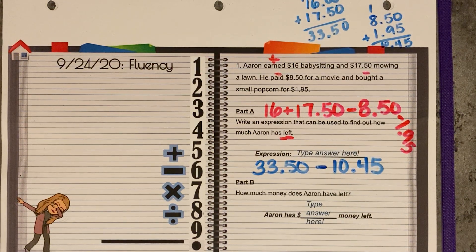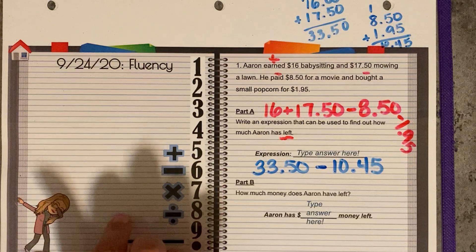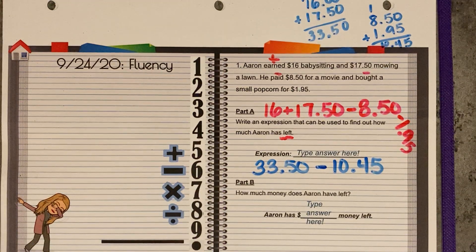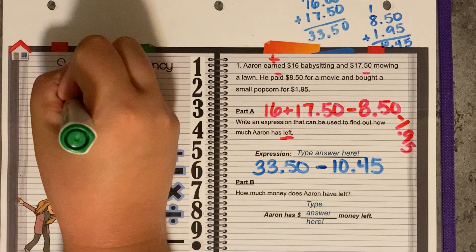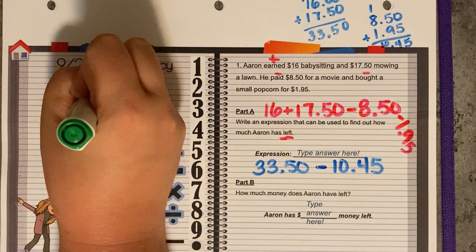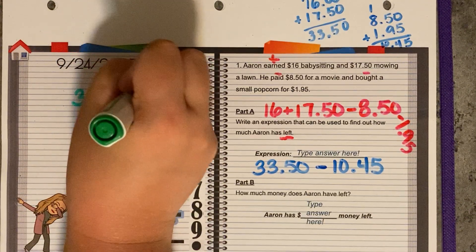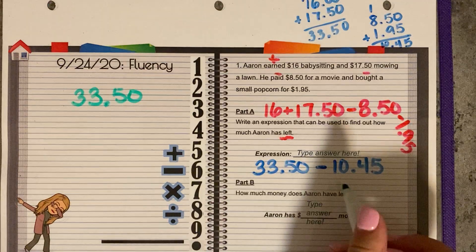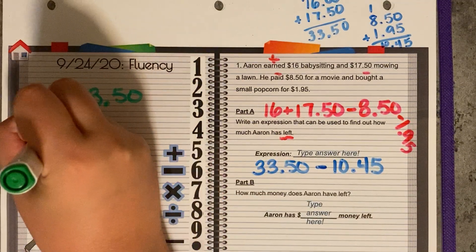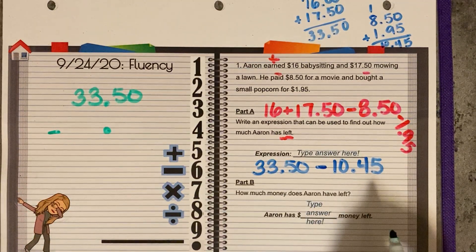Part B: how much money does Aaron have left? So we're actually going to have to solve this. Let's go take a look over here on this side. When we solve, what do we need to do with those decimals? Line them up. $33.50, remember that decimal — line them up — minus $10.45.